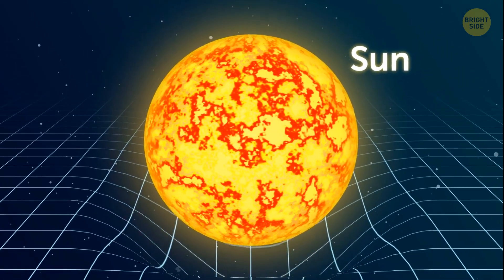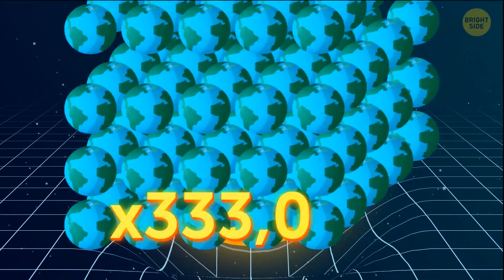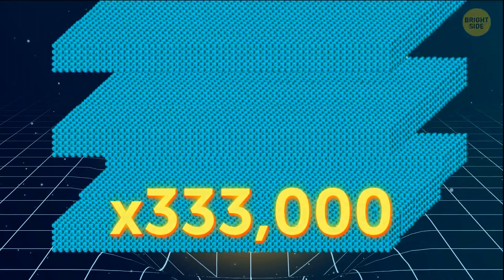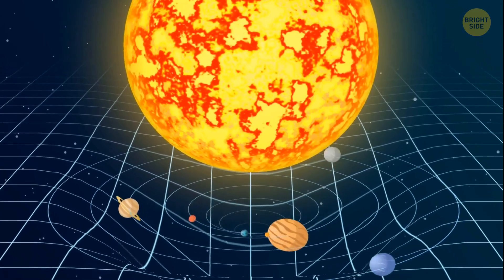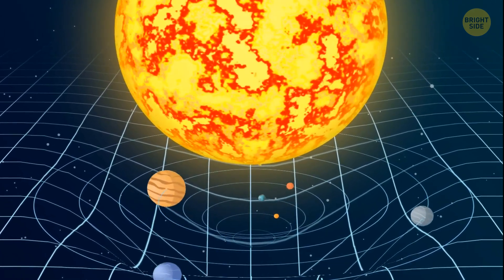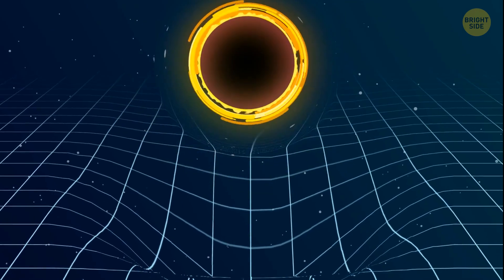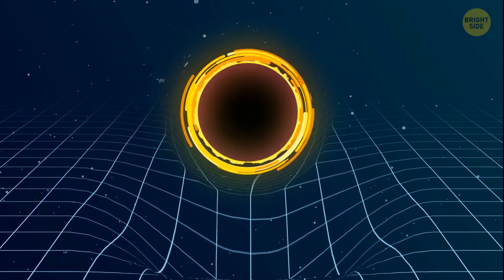By comparison, here's the Sun. It's almost 333,000 times heavier than the Earth. So it makes a really big funnel, so big that all the planets in our solar system move around that star inside that funnel. So now let's put a black hole on a space-time grid.